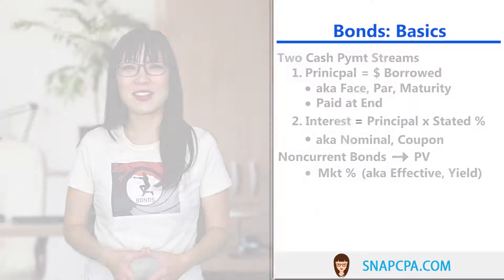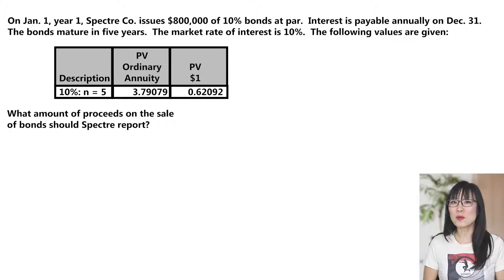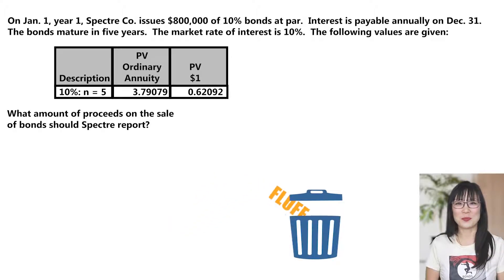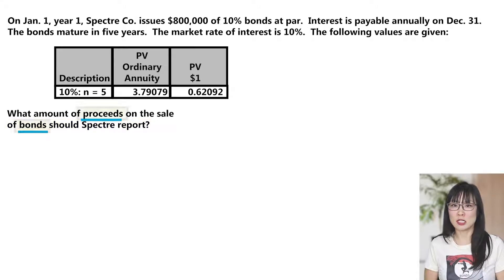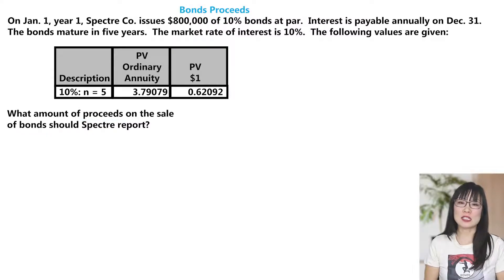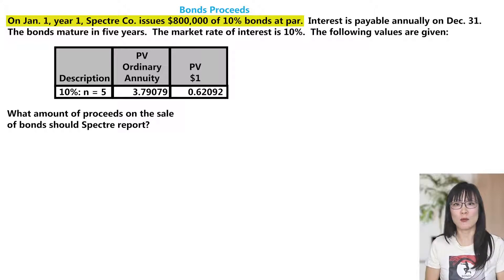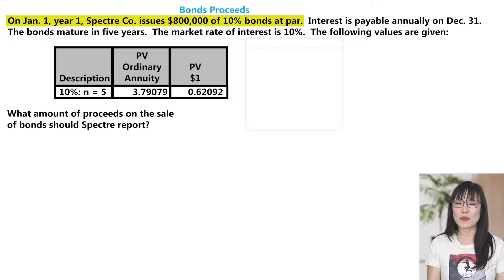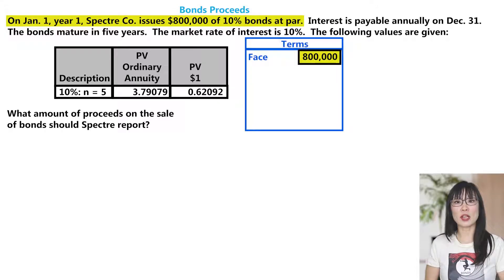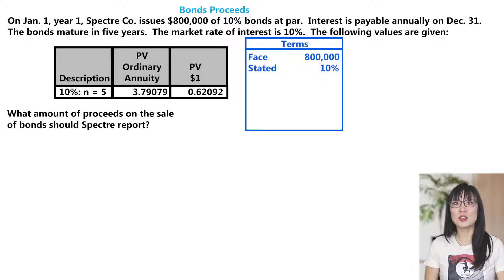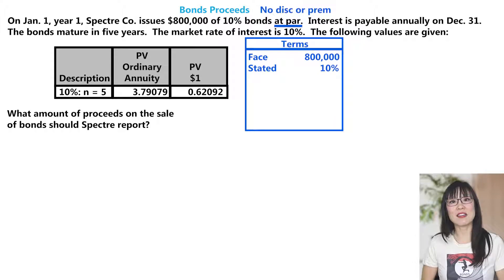Let's see how these concepts work with an example. Start by reading the question, then as you go through the prompt you can keep what you need and throw out what you don't. The question reads: what amount of proceeds on the sale of bonds should Specter report? On January 1, Year 1, Specter issues $800,000 of 10% bonds at par. The face value is $800,000, the stated rate is 10%, and issued at par means these bonds are issued at face value — there is no discount or premium.